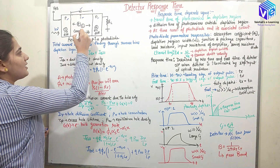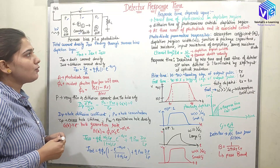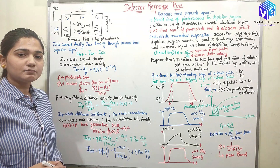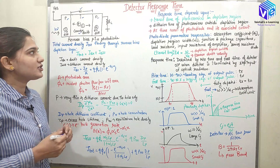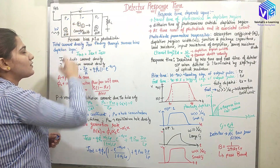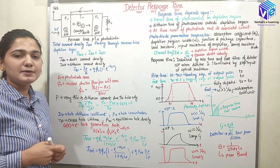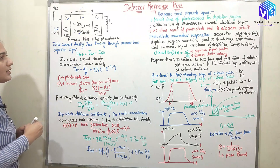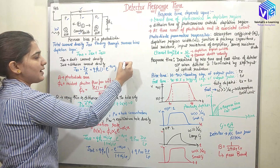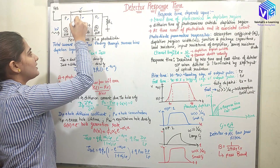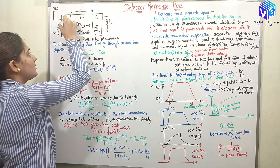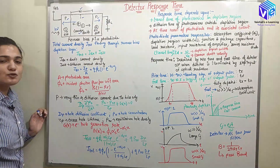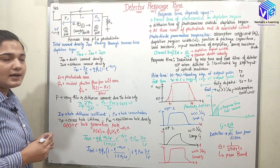Inside the I region we have both positive as well as negative charges — electrons as well as holes are generated — but these are moving with the drift velocity. We all know that the diffusion velocity is very less compared to the drift velocity. So the time taken for the charges to move with the drift velocity is very less compared to the time taken for moving the same distance by diffusion velocity. We know that when this positive charge or hole is moving to the P region and the negative charge, the electron, is moving to the N region, it is going to generate an external current in the circuit.